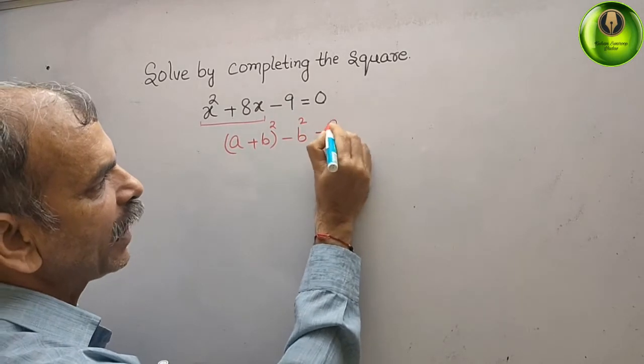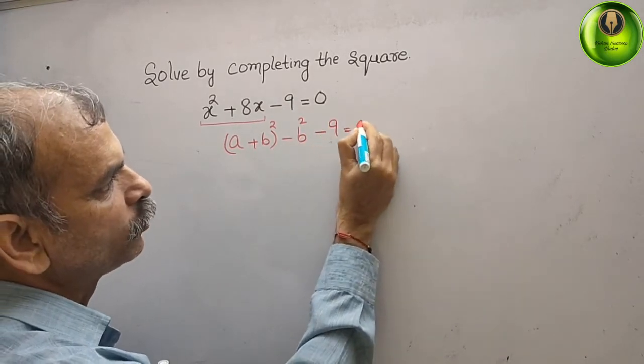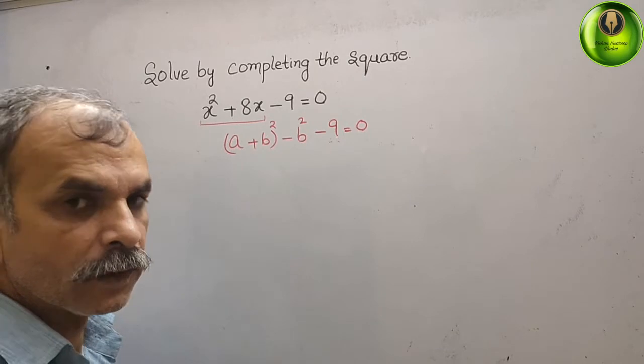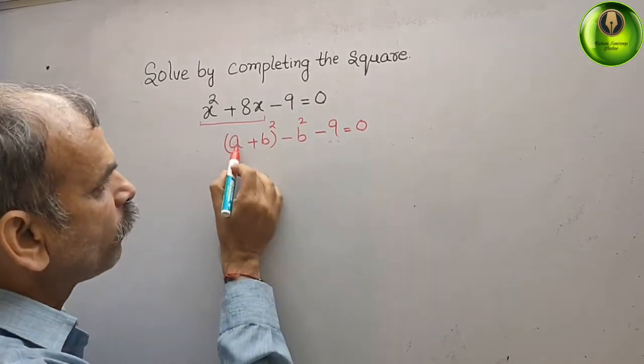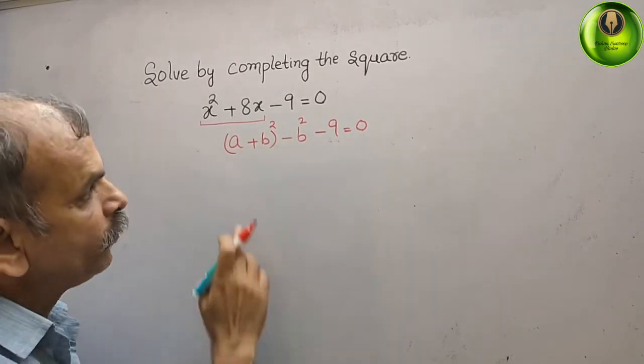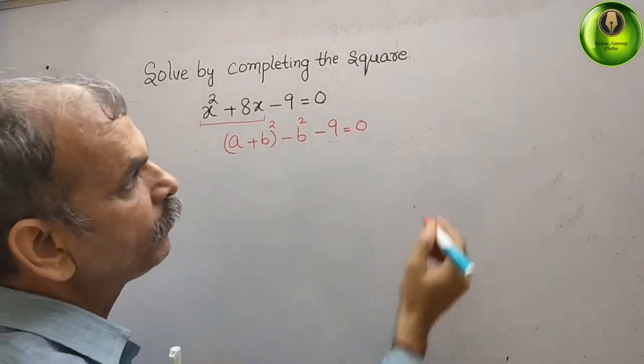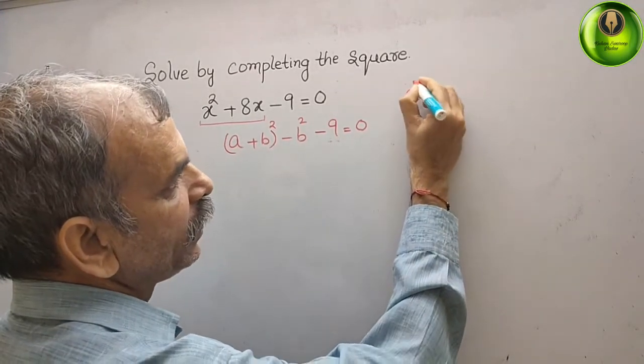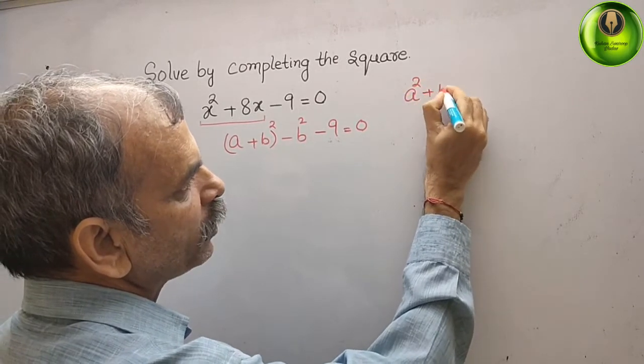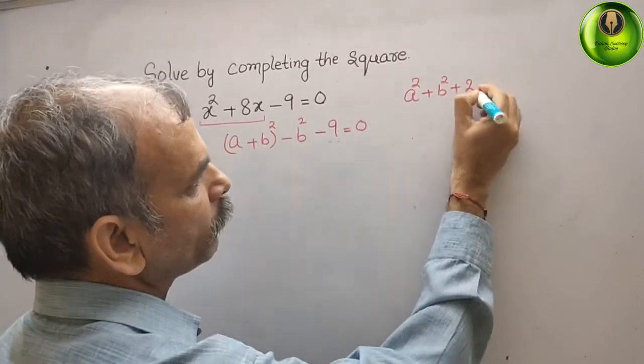Now we will find out the value of a. We know that (a + b)² is what? We can write it here: a² + b² + 2ab. Now compare this by the first term, we will get a is equal to x.